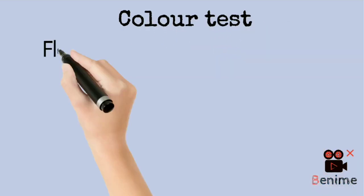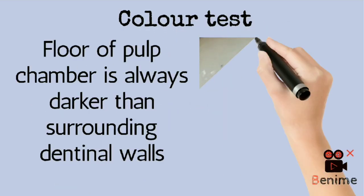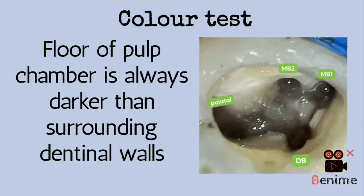Our next test is the color test. It is completely based on your observation. The floor of the pulp chamber is always darker than the surrounding dentinal walls. By keen observation, you can mark the junction of the pulp chamber floor and walls. Accordingly, prepare the access cavity by tracking the dark line and following the road map.